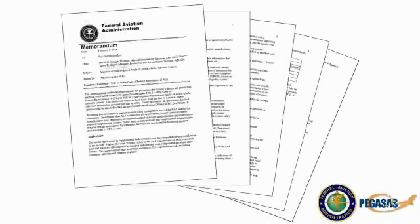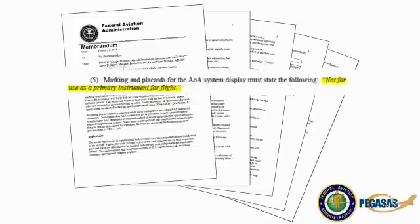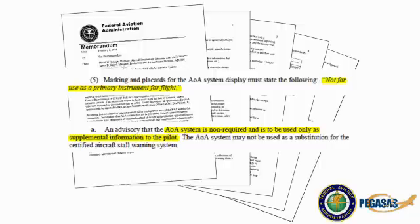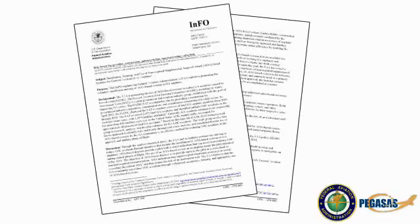The FAA has disseminated a press release indicating that they are streamlining the process for approval of angle of attack equipment in various aircraft. Within the press release design requirements, the FAA has mandated that a placard be placed indicating that the AOA system is not for use as a primary instrument for flight. Within the operational limitations section, they have stated that an AOA system is non-required and is to be used only as supplemental information to the pilot. The FAA has also released Information for Operators (INFO) numbered 14010, dated July 25, 2014, which addresses the installation, training, and use of non-required supplemental angle of attack based systems for general aviation airplanes.